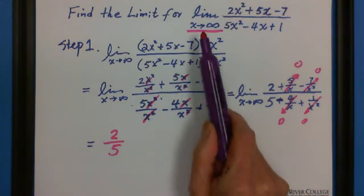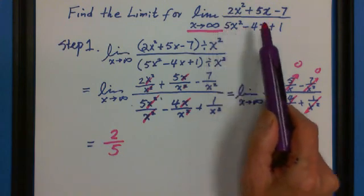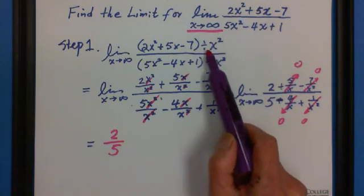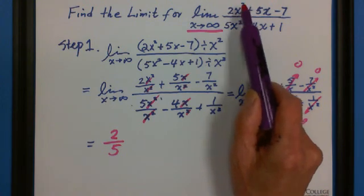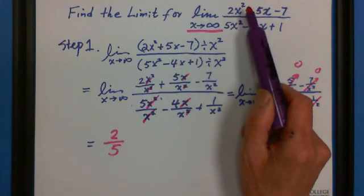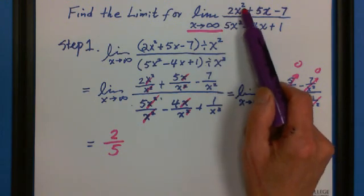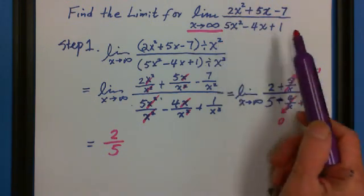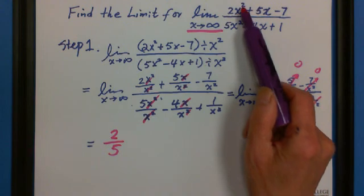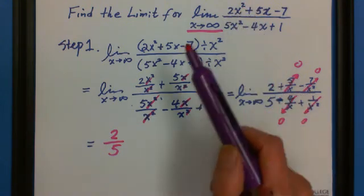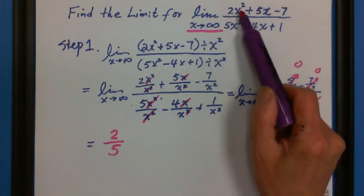Always remember when x approaches to infinity, we divide the top and bottom both by the highest exponent of the function. Now it's x squared. If you're given x cubed, you divide x cubed. If the exponent is x to the fourth, you choose the highest. Because this question, both top and bottom, the highest is 2.